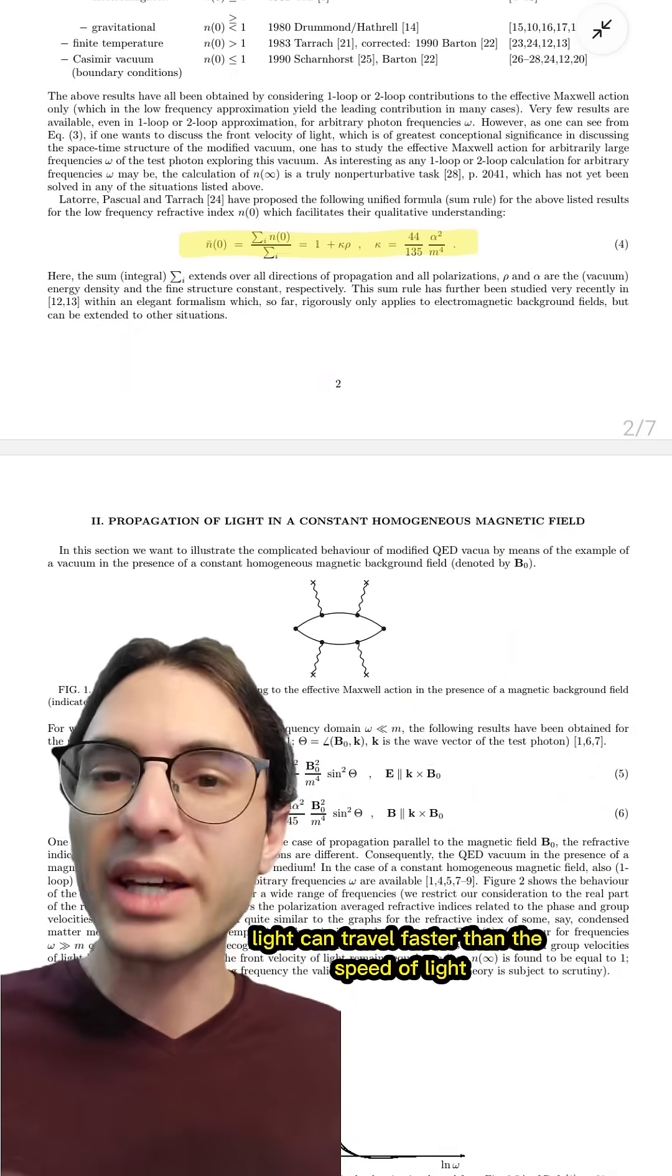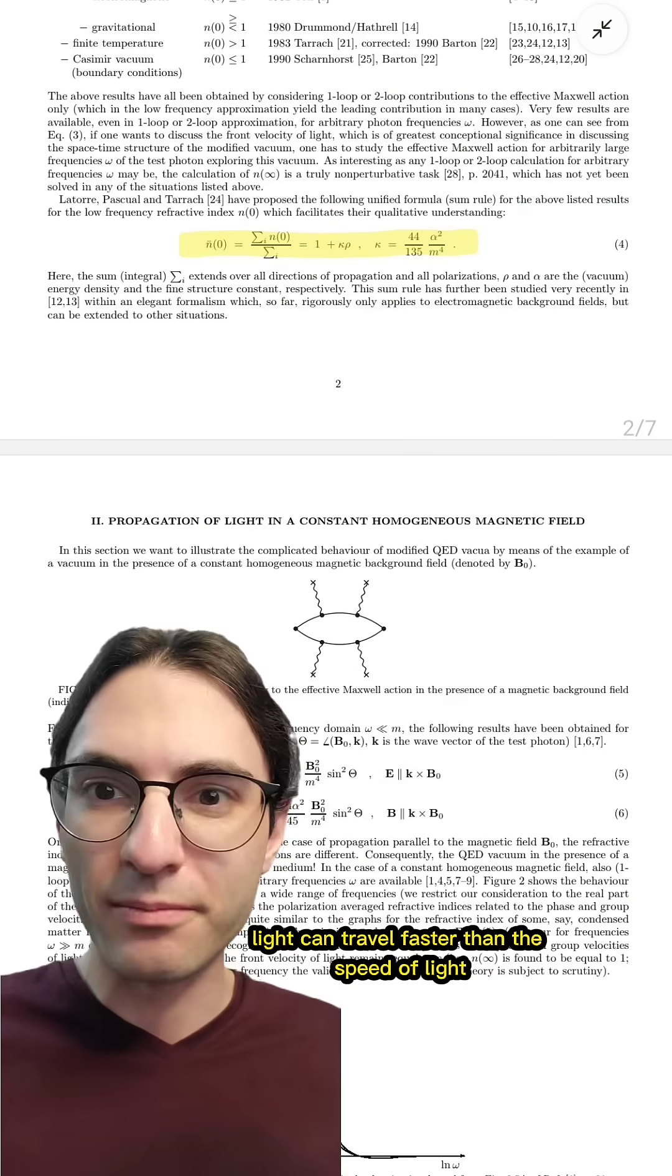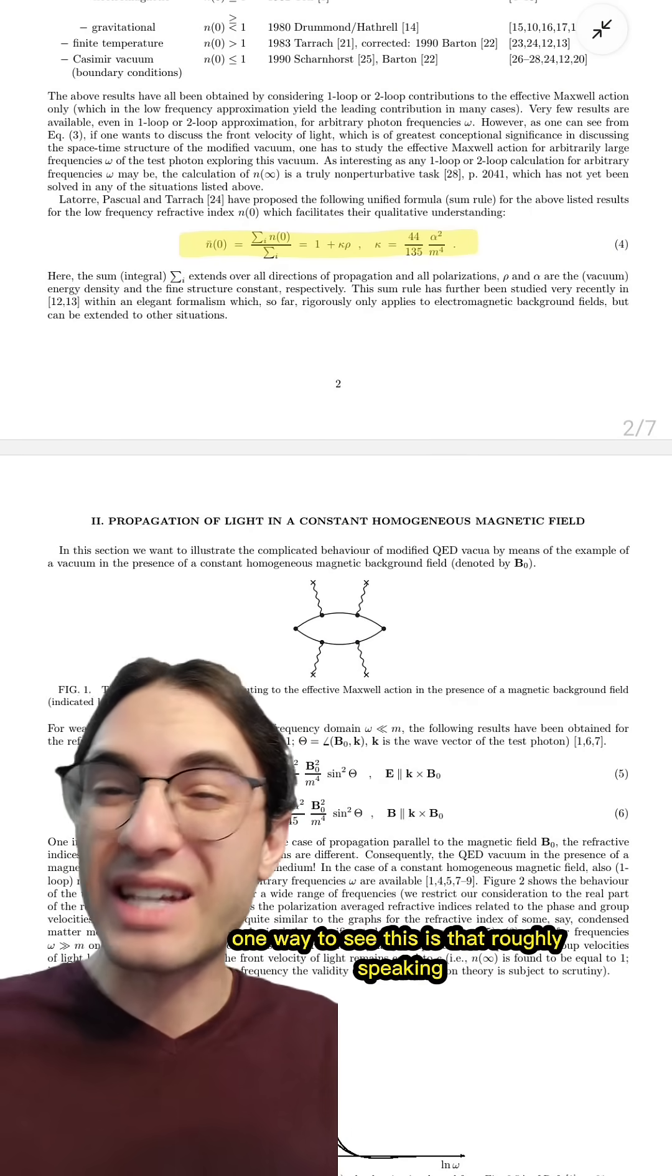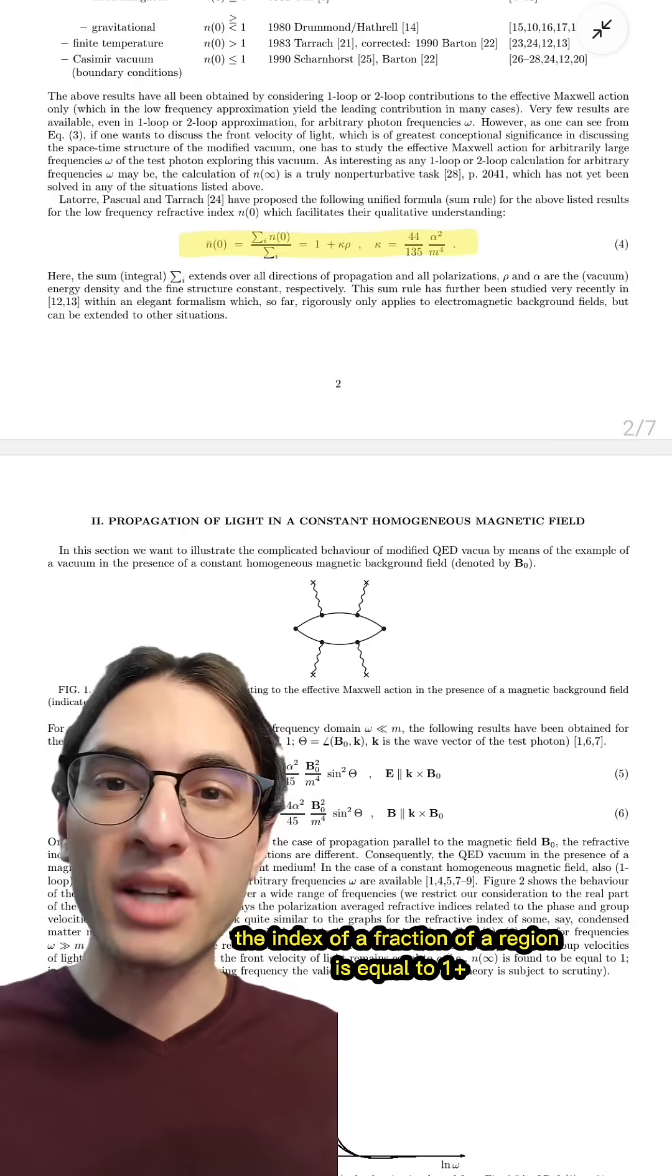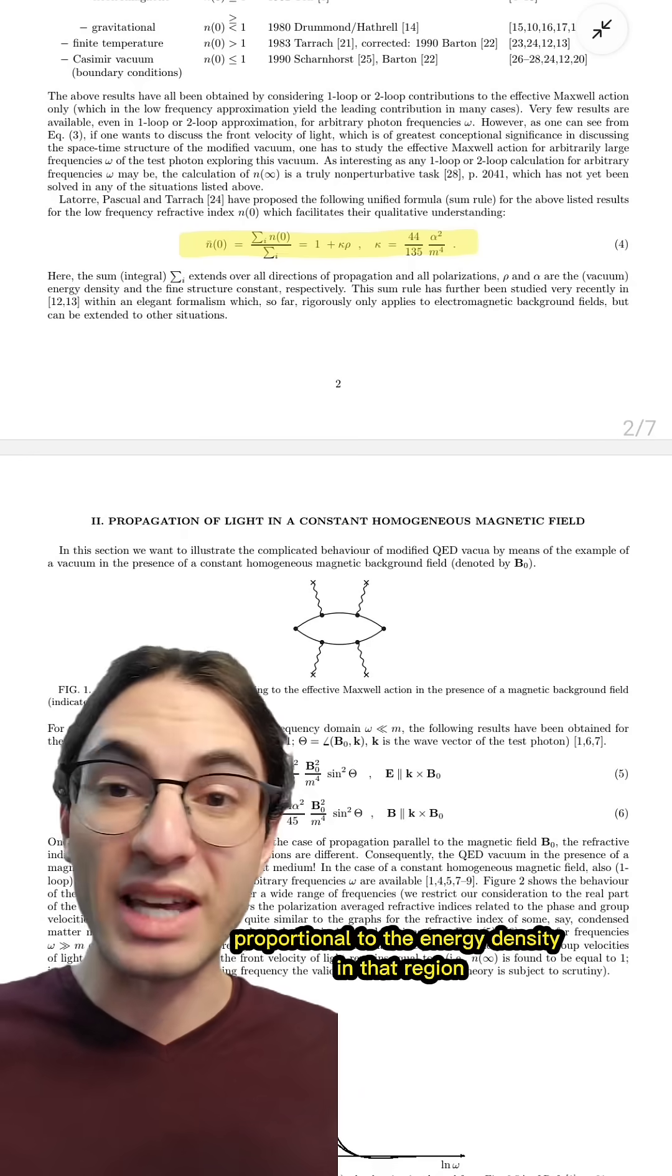And that means that, paradoxically, light can travel faster than the speed of light. One way to see this is that, roughly speaking, the index of refraction of a region is equal to one plus a number proportional to the energy density in that region.